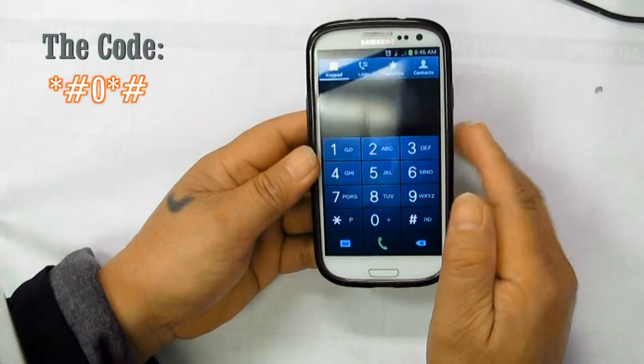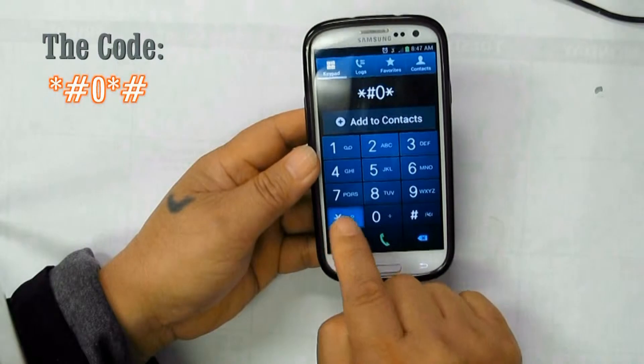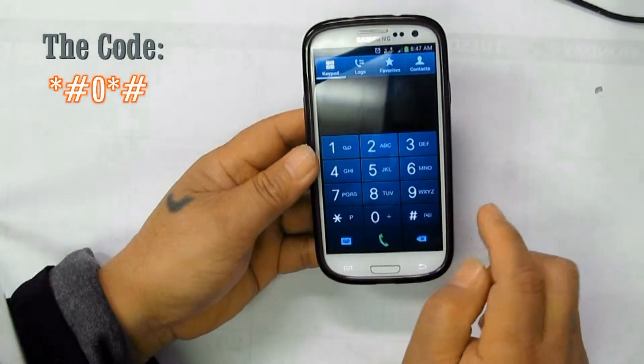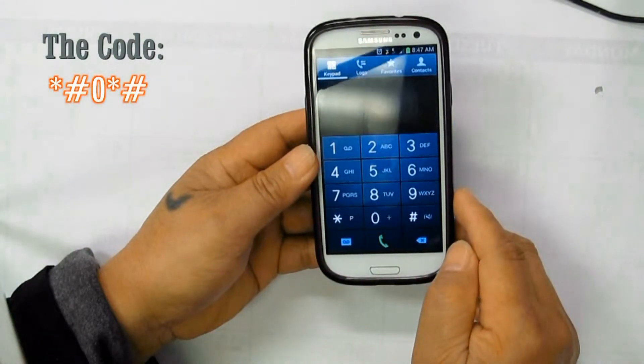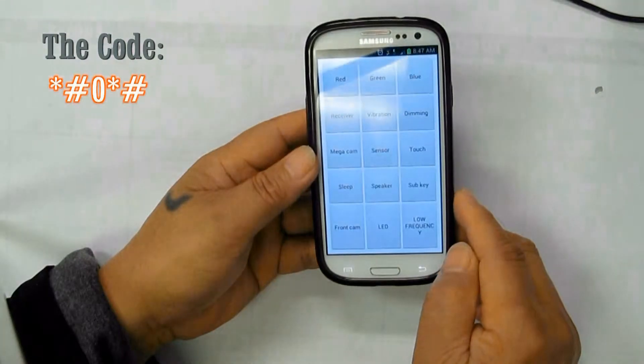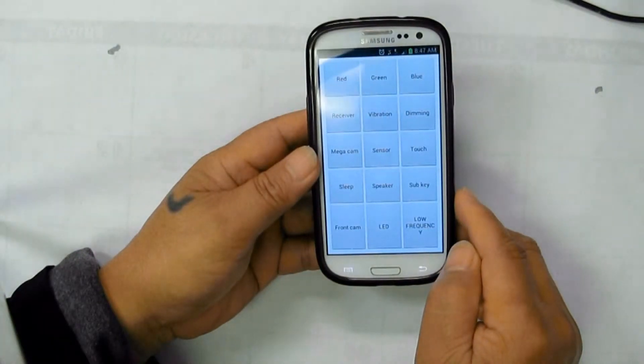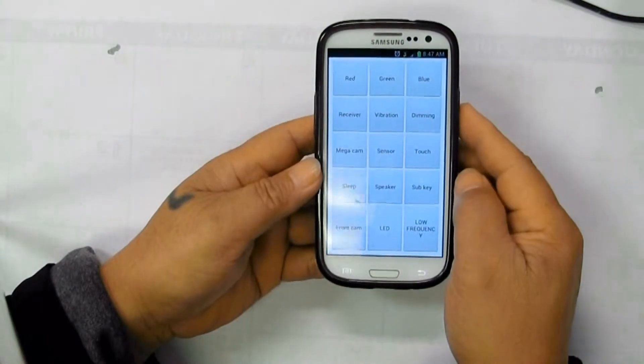Now here is the code: pound sign, zero, pound sign. Now the screen shows most of the test areas of your cell phone.